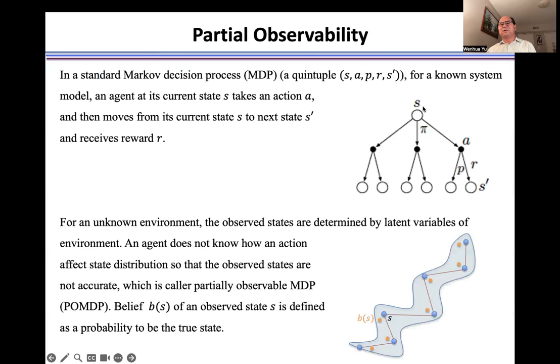An agent at current state s takes action a under policy π, moves to next state s', and receives reward r if the state transition probability is known. Both the current state s and next state s' are observable, meaning we can fully observe s and s'.